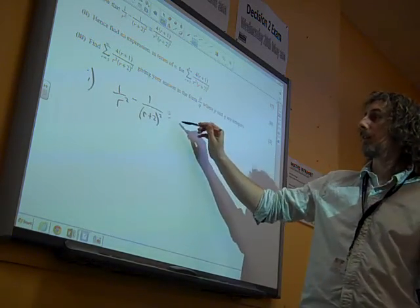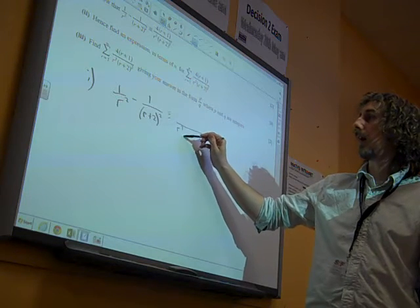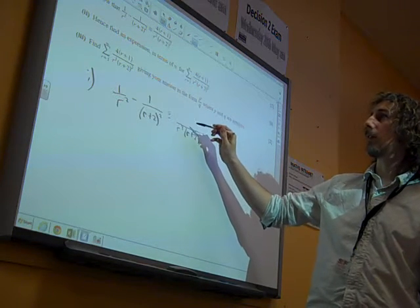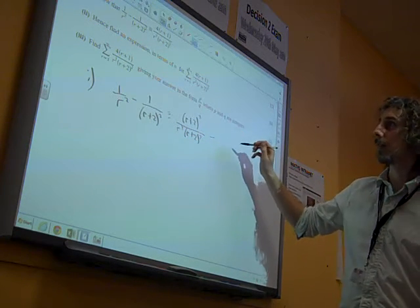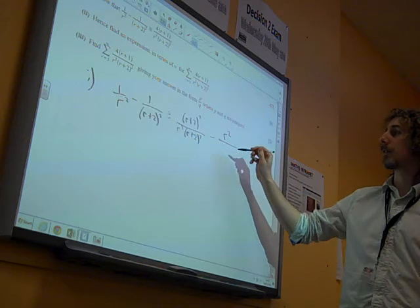Show that that equals that. So it's putting over a common denominator. The first fraction will go to r squared r plus 2 squared, and the top line we need to multiply by r plus 2 squared. The second fraction we need to multiply by r squared.